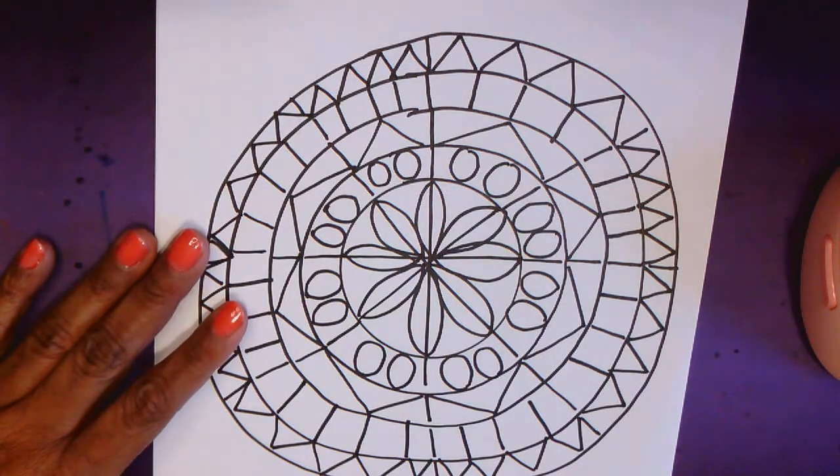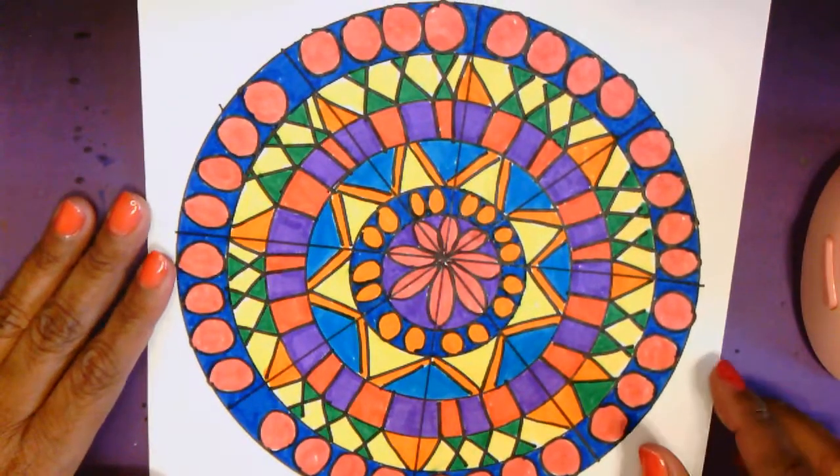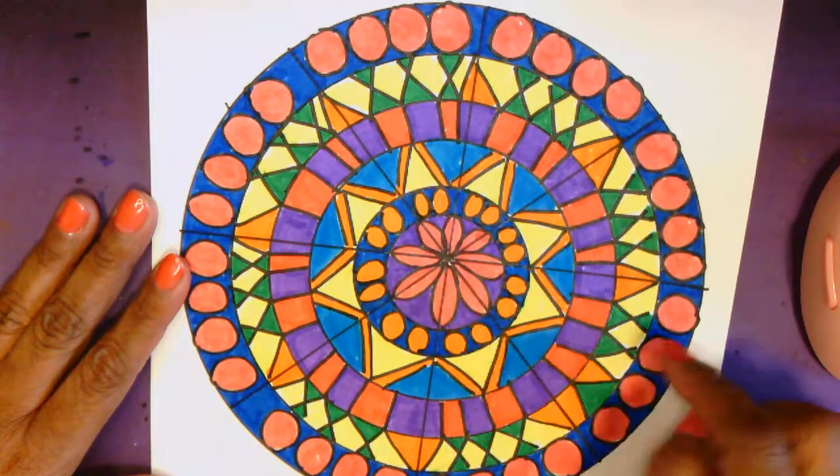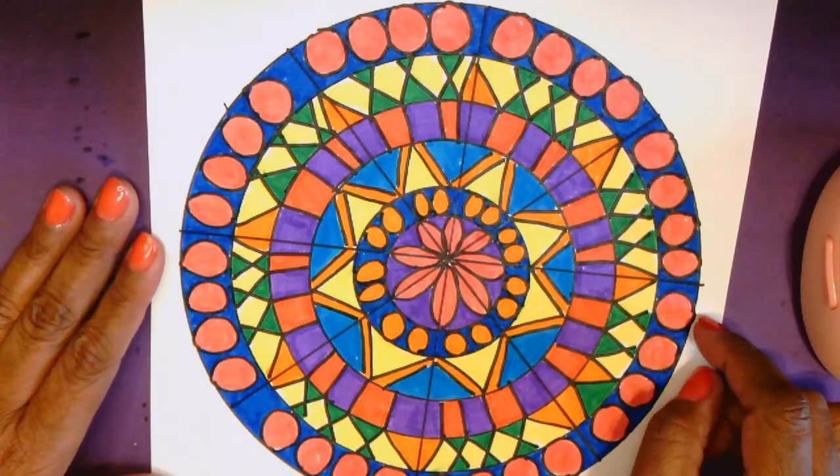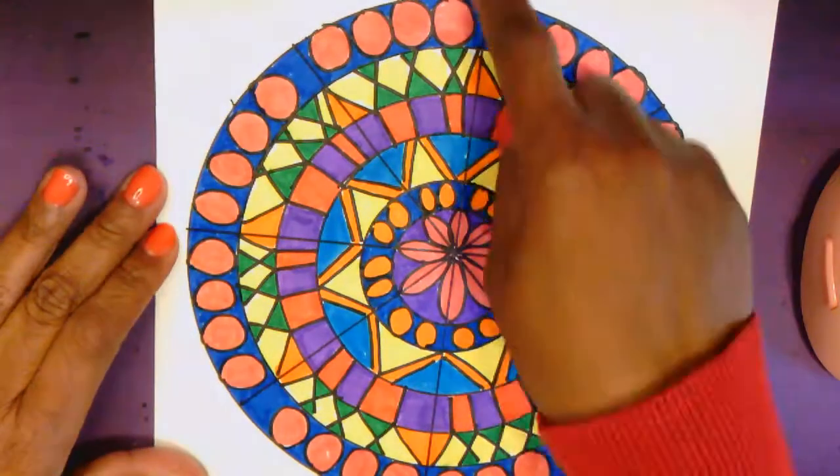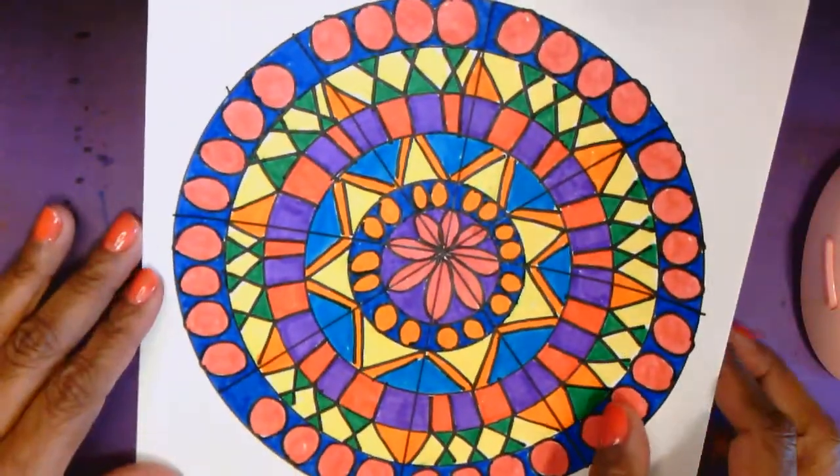So that is my drawn mandala. Here I have one that's already been colored in. The same process. I started with a circle in the center. Drew with my lotus flower. The only difference here is when I drew the line through the center. I just drew it all the way to the edge of the paper. So that way I didn't have to keep going back. And drawing the lines.